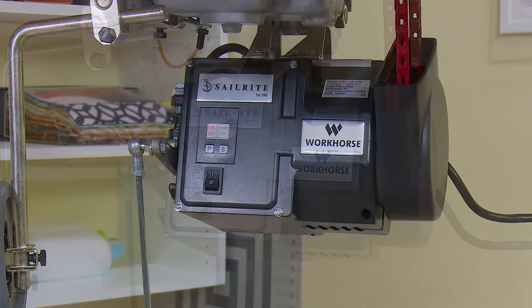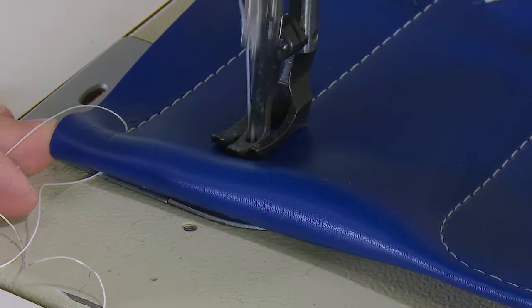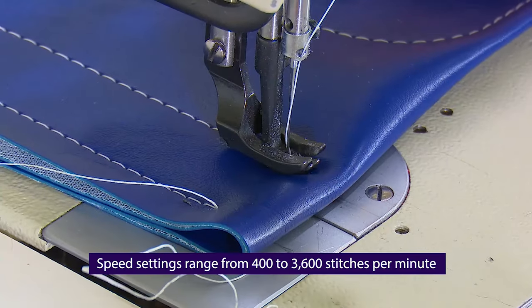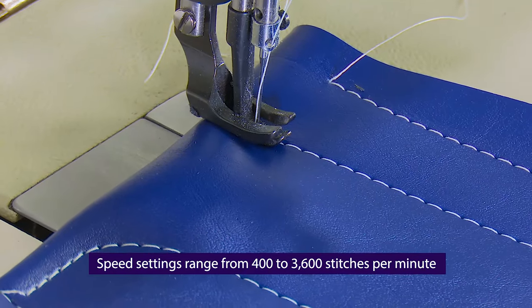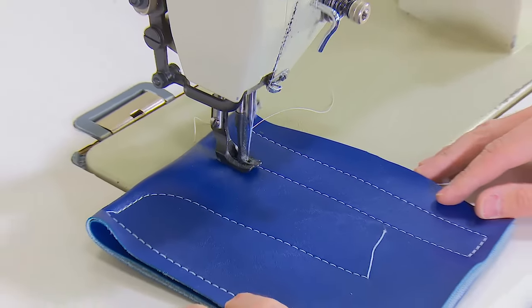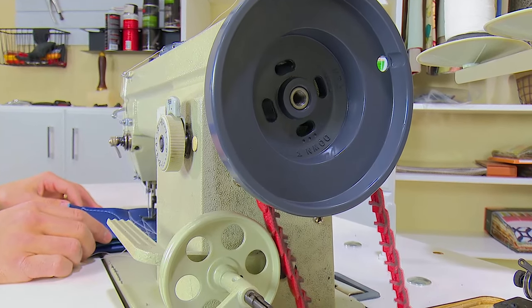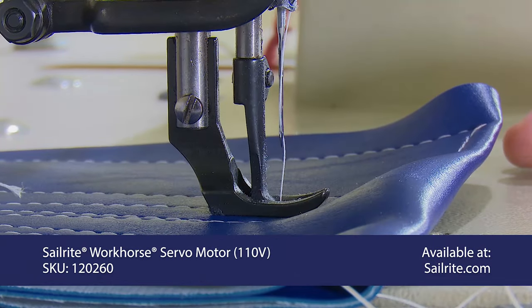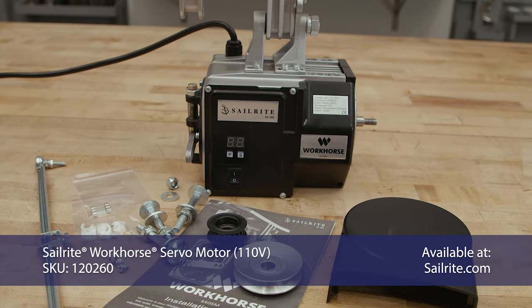The Workhorse is a 550-watt, 3.25-horsepower servo motor designed for continuous use on industrial sewing machines. Speed setting ranges from 400 to 3600 stitches per minute. Now you have the torque and power to punch through thick assemblies and yet you have the super slow speed control so that you can stitch one stitch at a time without the machine taking off on you as it would with the clutch motor. Order the Sailrite Workhorse servo motor today from Sailrite. Thanks for watching.